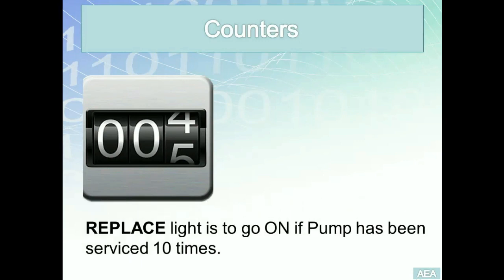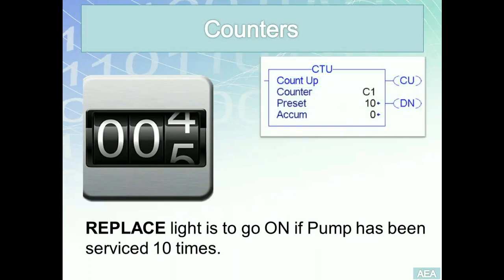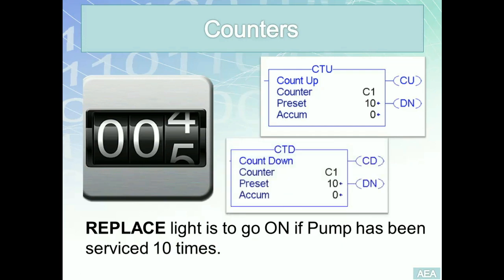Counters are instructions that we can use anytime there is a counting requirement. For example, a replace light is to go on if a pump has been serviced 10 times. This means we can use a counter that counts in the up direction with a preset value of 10. In Allen Bradley, we can count in both directions — up and down — depending on the requirement. The CTU block enables counting in the up direction; the CTD block enables counting in the down direction.